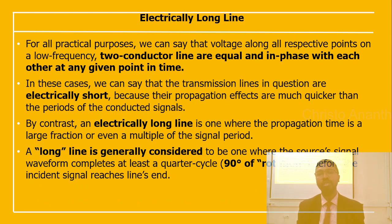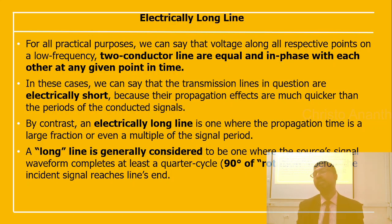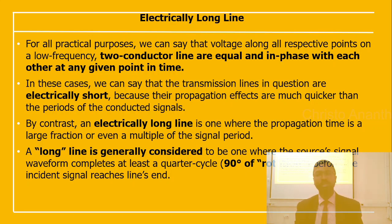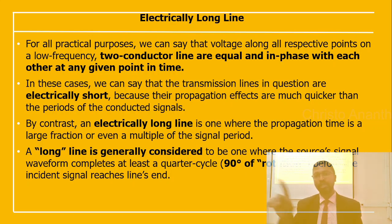For practical purposes, voltages along respective points on a low-frequency two-conductor line are equal and in phase with each other at any given time. Transmission lines are called electrically short when their propagation effects are much quicker than the period of the conducted signals. An electrically long line is one where the propagation time is a large fraction or even a multiple of the signal period — generally where the source signal waveform completes at least a quarter cycle (90 degrees) before the incident signal reaches the line end.